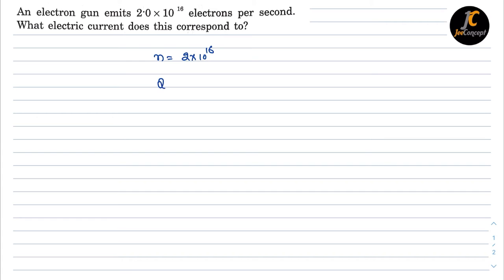So the total charge Q is going to be 2×10^16 times the charge on one electron, which is 1.6×10^-19 coulomb. This is equal to 3.2×10^-3 coulomb.